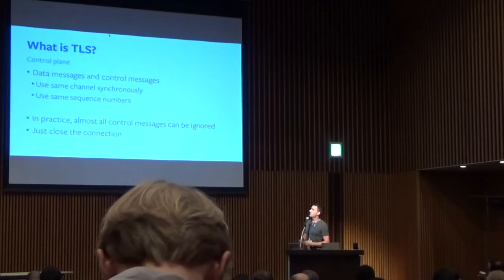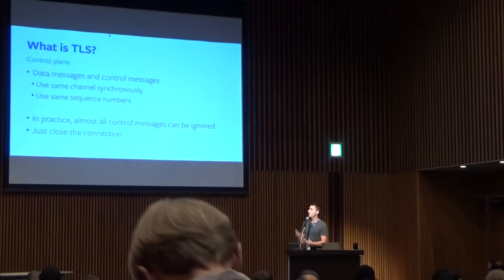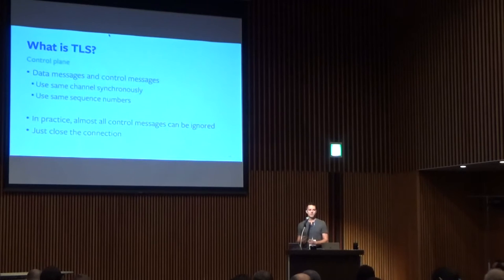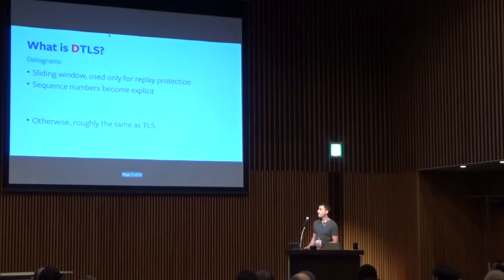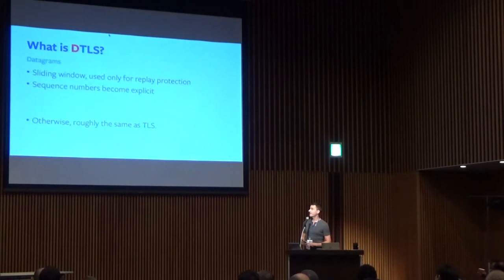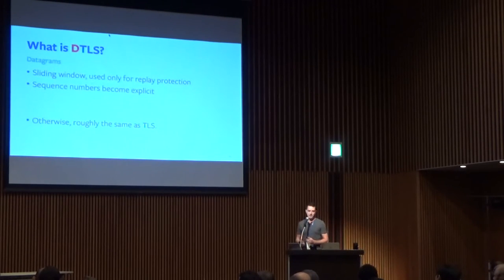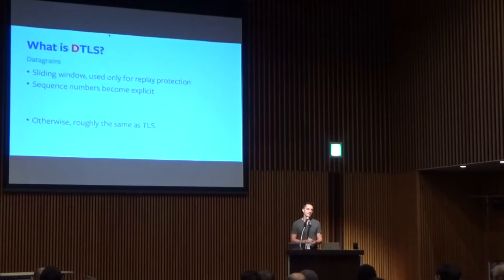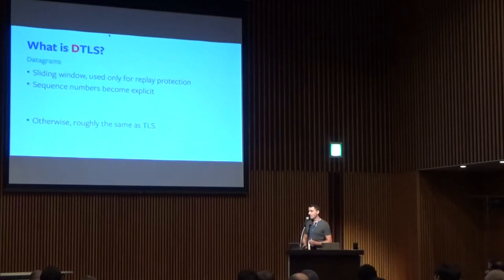The one annoying part about this is trying to separate the data and control messages. The annoying part is that they use the same sequence numbers, so you do have to manage the sequence numbers explicitly between user space and kernel space. We also have initial support for DTLS — it's pretty much exactly the same as TLS, except it is a datagram message so you're allowed to drop messages. It actually has additional complexity on top of TLS, and it implements its own sliding window — only for replay protection, so it's not terribly complicated. This also means there's a little bit of extra state for DTLS that you may have to pass between user space and kernel space.